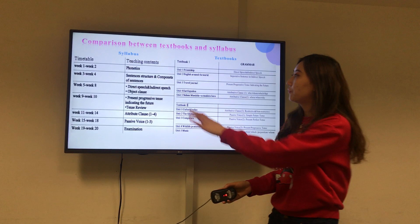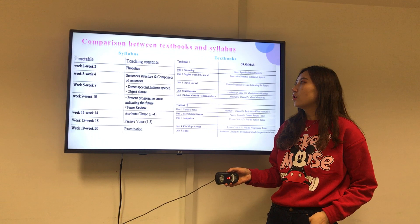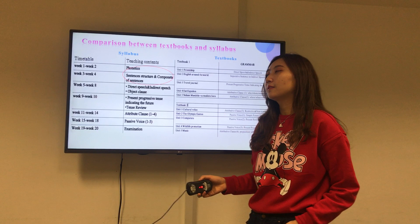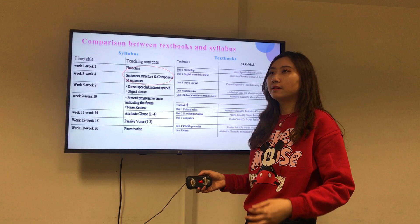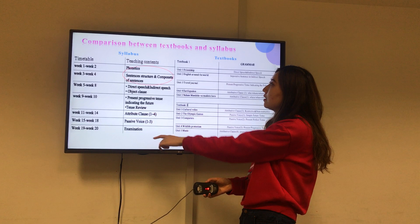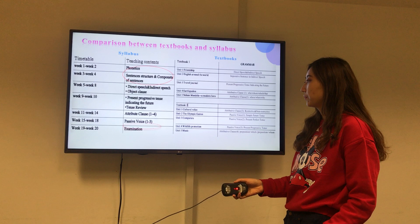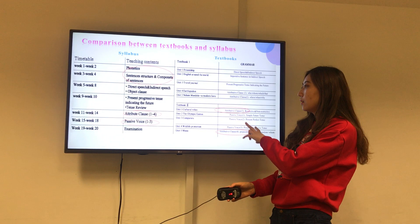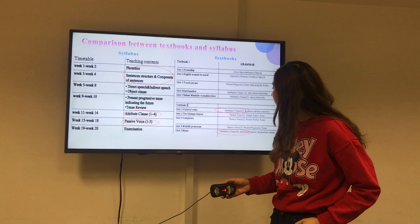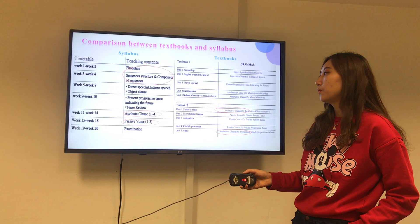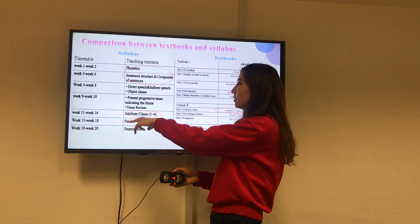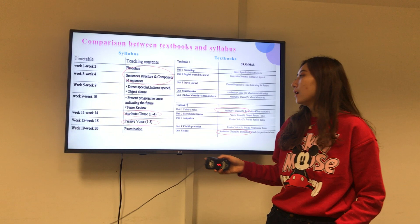So let's make a comparison between the textbooks and the syllabus. In the first four weeks, the contents don't appear in the textbook — they are based on the curriculum, which we will see in the next slide. We can also see that the sequence in the syllabus is quite different from the textbook. For example, in the textbook the grammar point 'attributive clause' appears in the first unit and last unit of textbook two. However, in the syllabus they are arranged together, with the sequence of passive voice placed after the attributive clause.